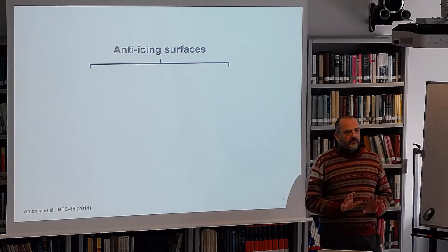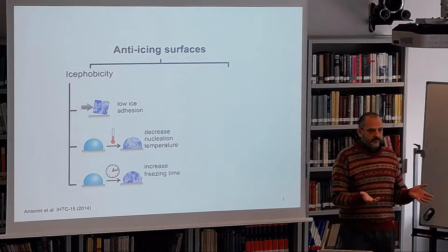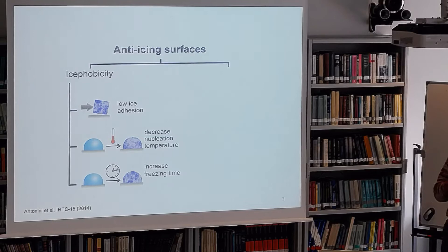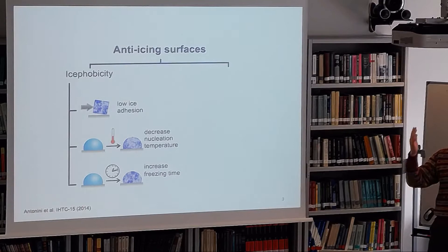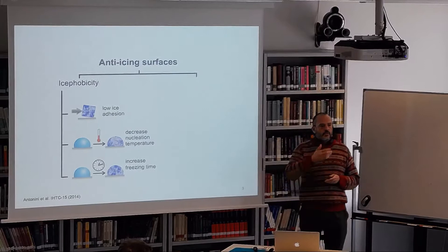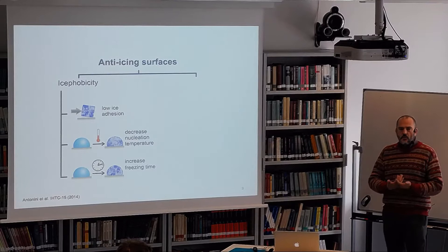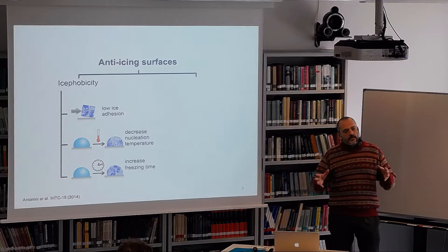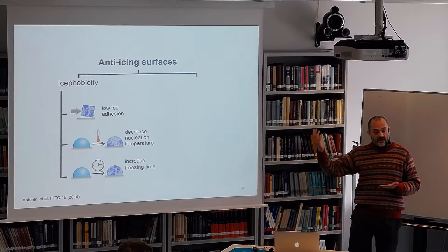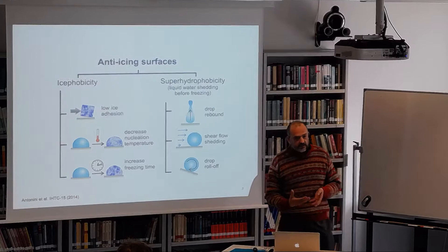When speaking about anti-icing surfaces, we think of two main solutions. One is ice-phobicity — a system with low ice adhesion where the ice is formed but vibration and the boundary layer wash it from the surface. The other is the decrease of the nucleation temperature, which impedes ice formation for a given temperature. The third is the increase of freezing time — if you increase the freezing time, boundary layer vibration can displace the liquid from the surface before ice forms.